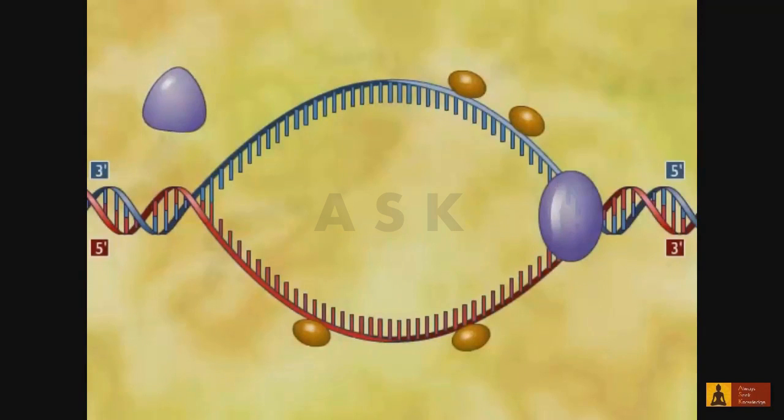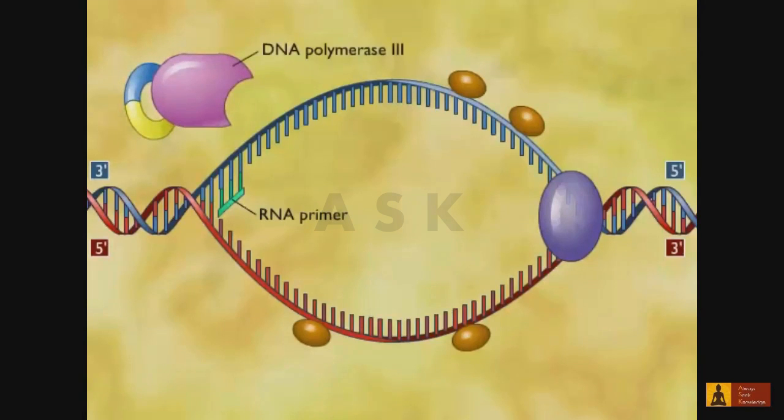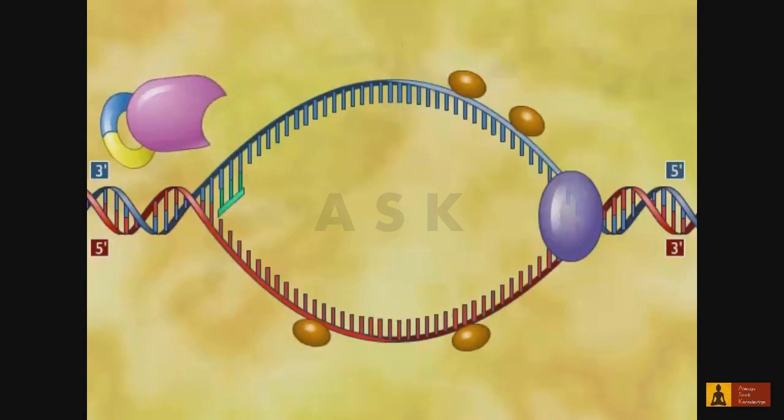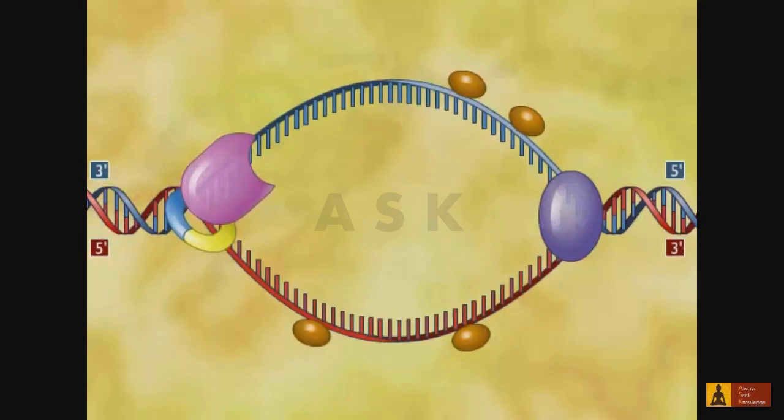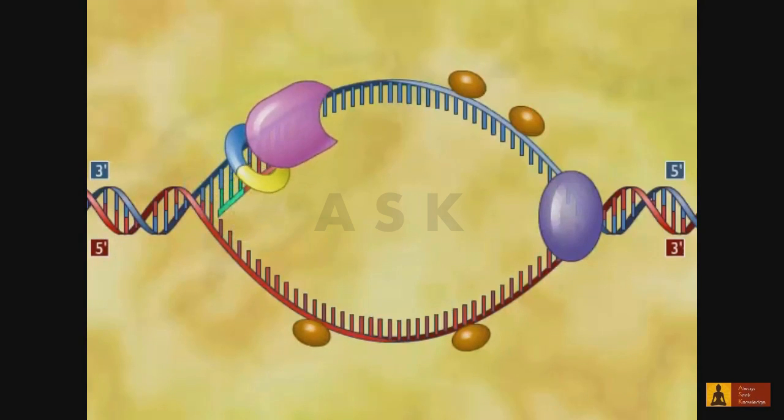Therefore, an RNA polymerase called a primase constructs an RNA primer, a sequence of about 10 nucleotides complementary to the parent DNA. DNA polymerase 3 can then add deoxyribonucleotides to synthesize the new complementary strand of DNA.